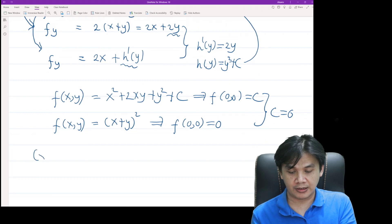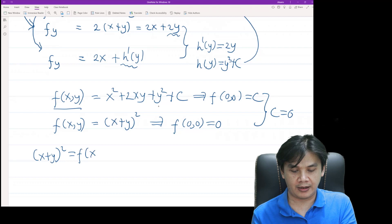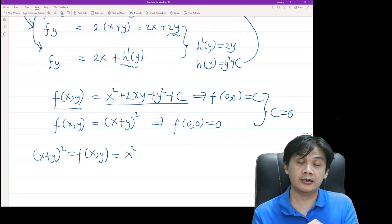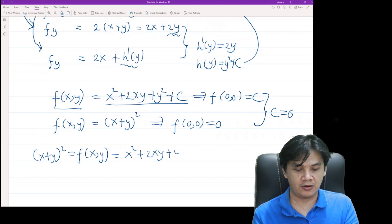(x+y)², which is equal to f(x,y), is equal to that, where c is equal to 0. So we have x² + 2xy + y².